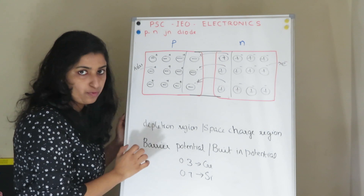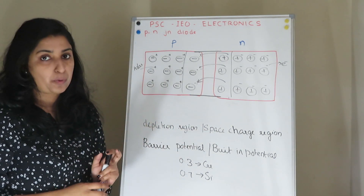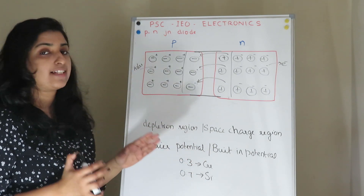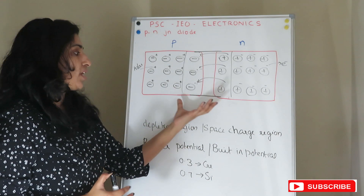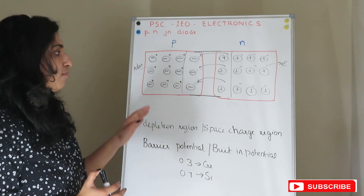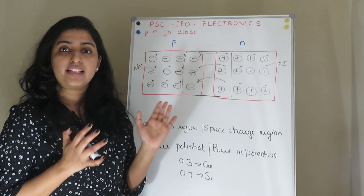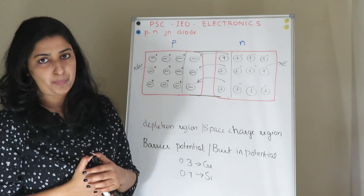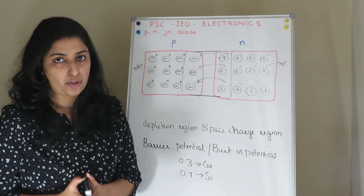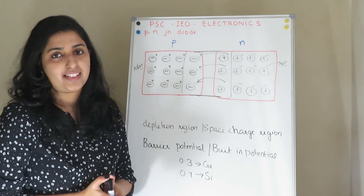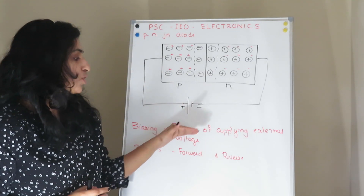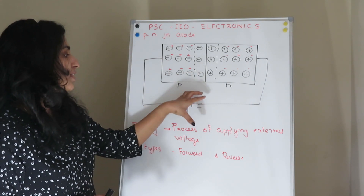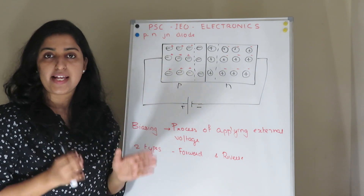This creates a potential difference, known as the barrier potential or built-in potential. For Germanium, it is 0.3V. For Silicon, it is 0.7V. This barrier potential, as a potential difference, prevents the movement of majority carriers — opposing force acts as a potential barrier. This is the zero-biasing condition of PN Junction Diode. Biasing is the process of applying external voltage to the PN Junction Diode.